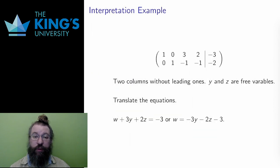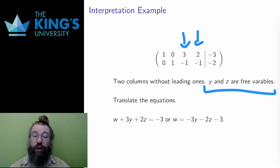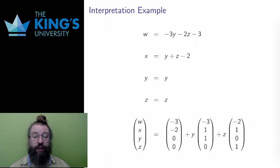Here is a more extreme example. There are two columns without leading ones, the y and the z column. So there are two free parameters, y and z. I can translate the first row and move the y and z terms to the right to get the w alone, and I can translate the second row similarly. This gives two equations, and I add the trivial equations y equal y and z equals z to them.